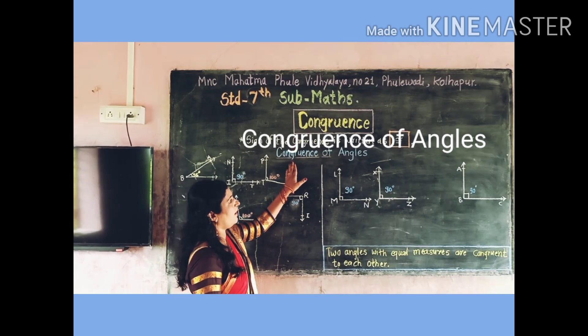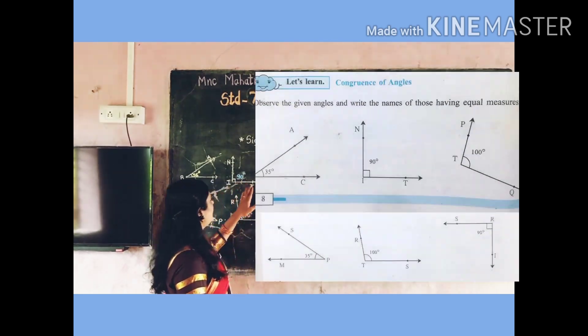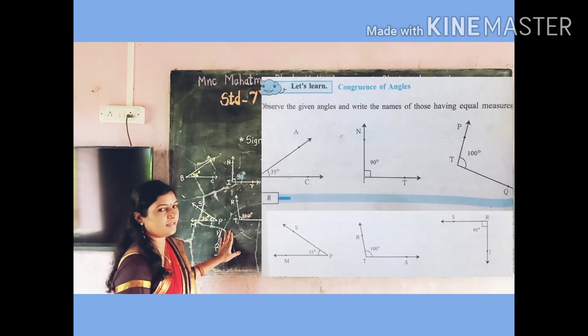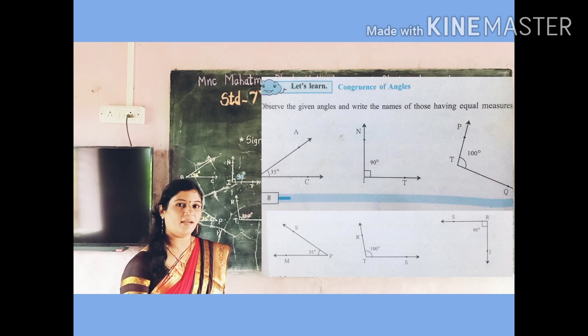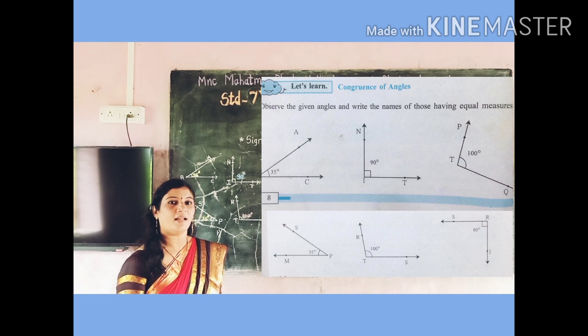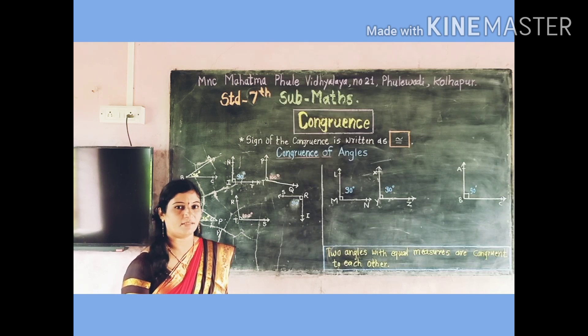Now next, we will see Congruence of Angles. Observe the given figures on page number 8 and 9 and write names of the angles which are equal in measurements.